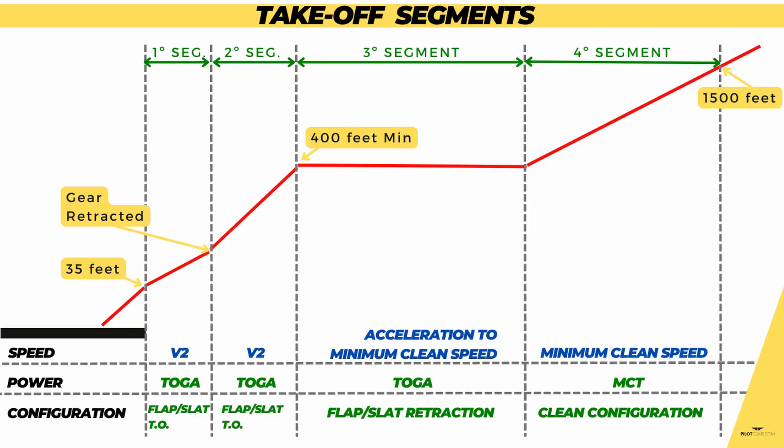Before actually seeing which are these four take-off segments, where they start, when they finish, what is the aircraft configuration throughout each of these take-off segments, we need to understand, first of all, why do we have these take-off segments? Why has the take-off flight path been divided into segments?